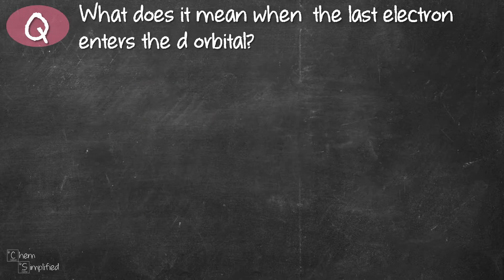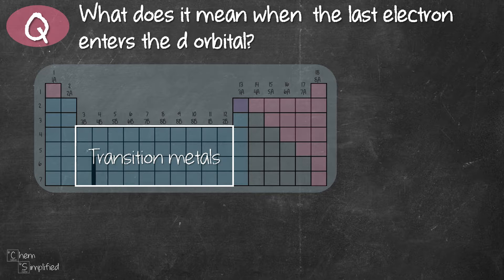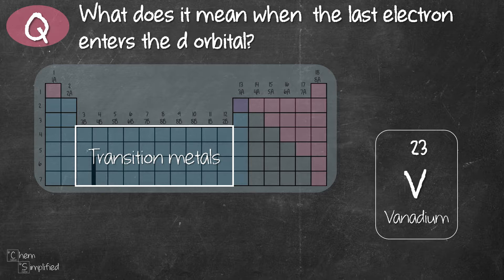So now that we know how electrons are filled, we're going to answer the first question, which in fact applies to all transition elements. Just in case you need a recap, transition metals are the elements that are located in the middle of the periodic table. So let's look at one of the transition metal, which is vanadium, element number 23. And it has 23 electrons.